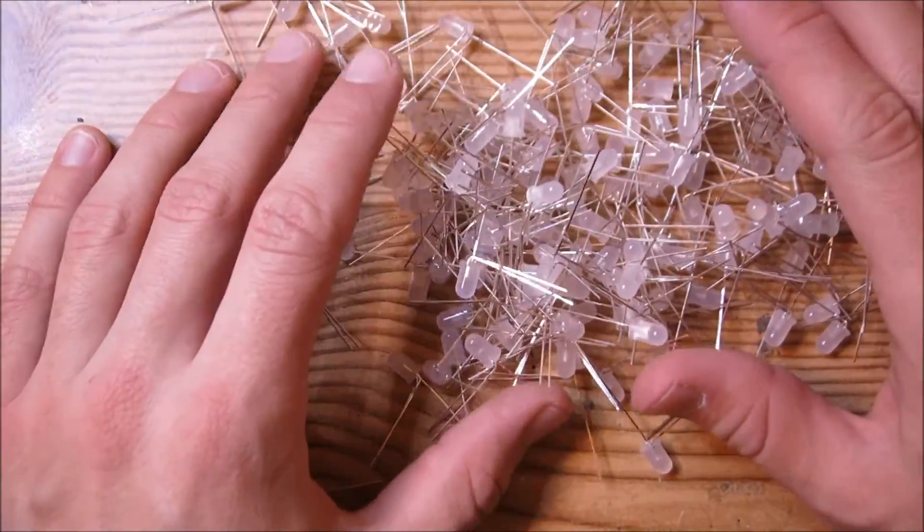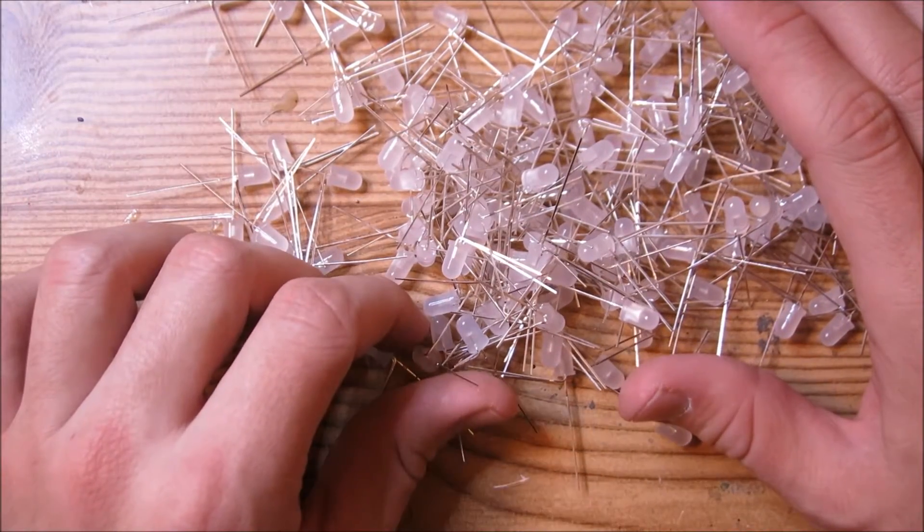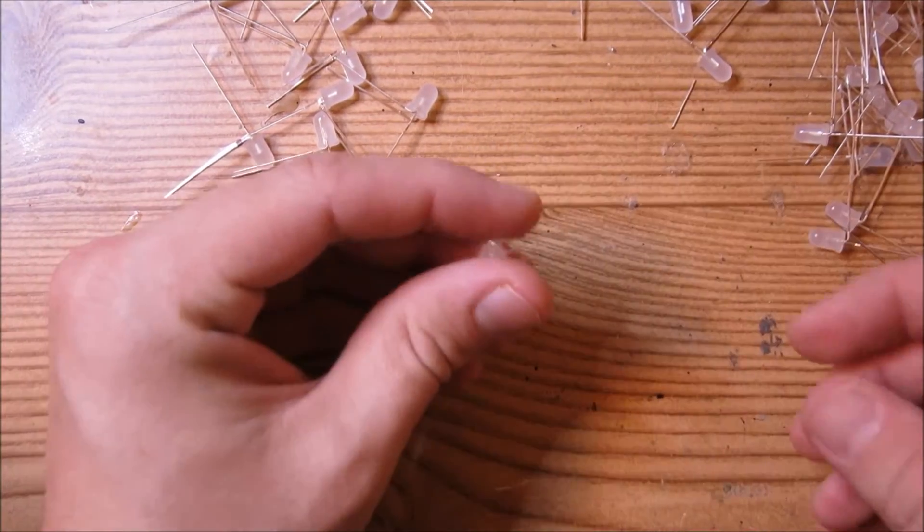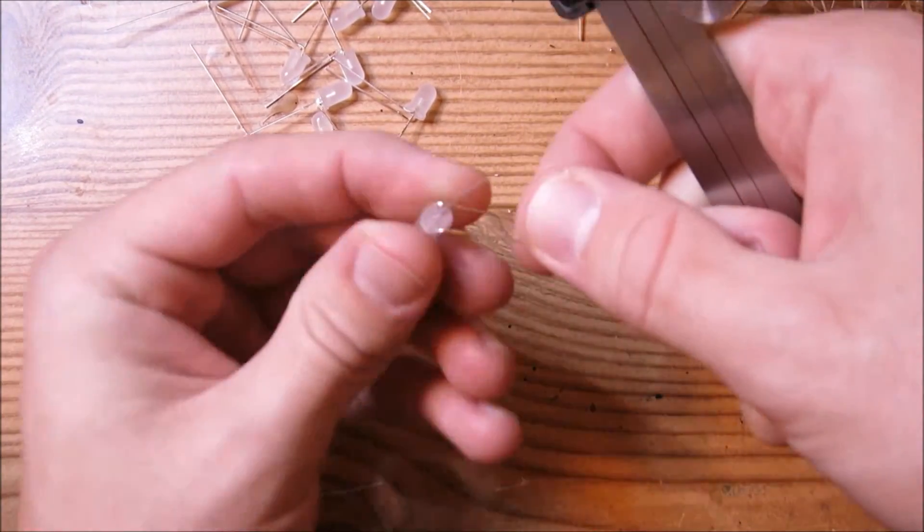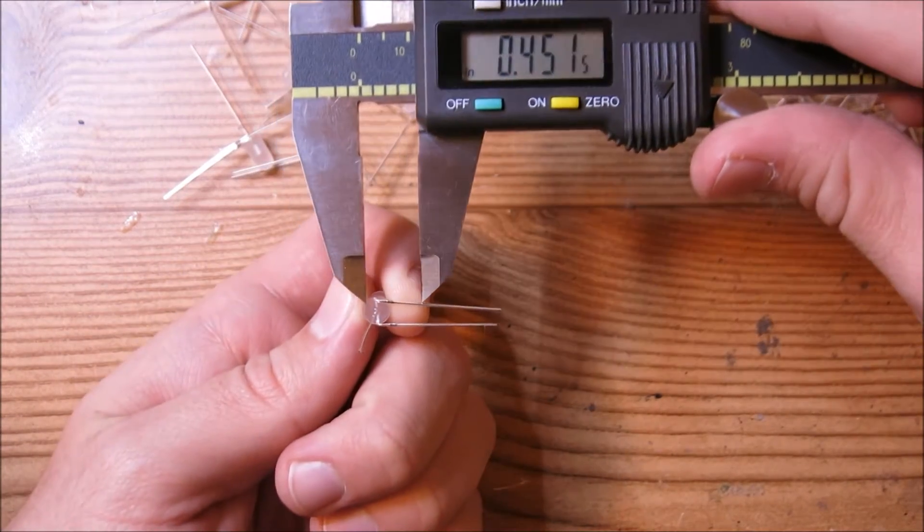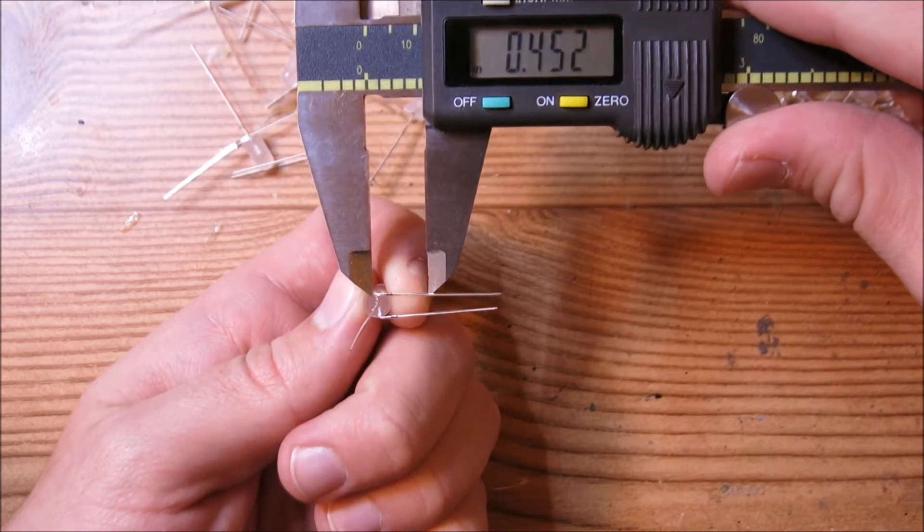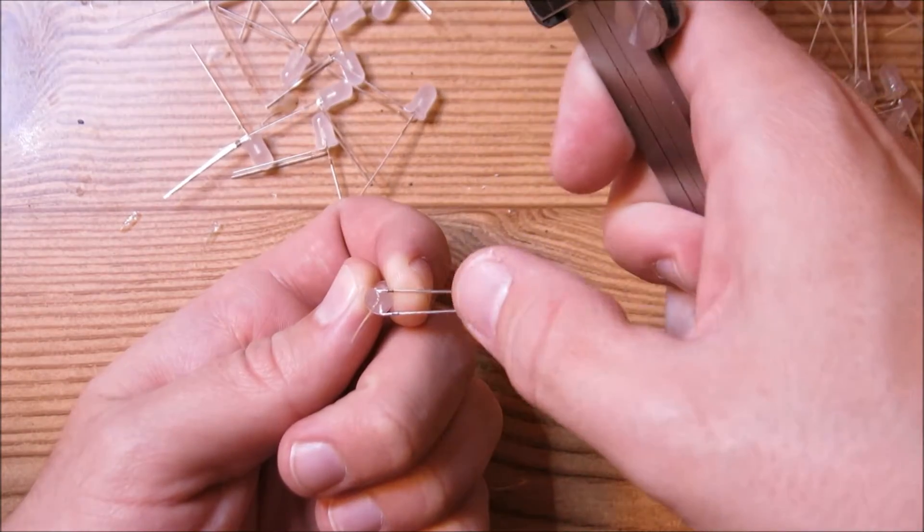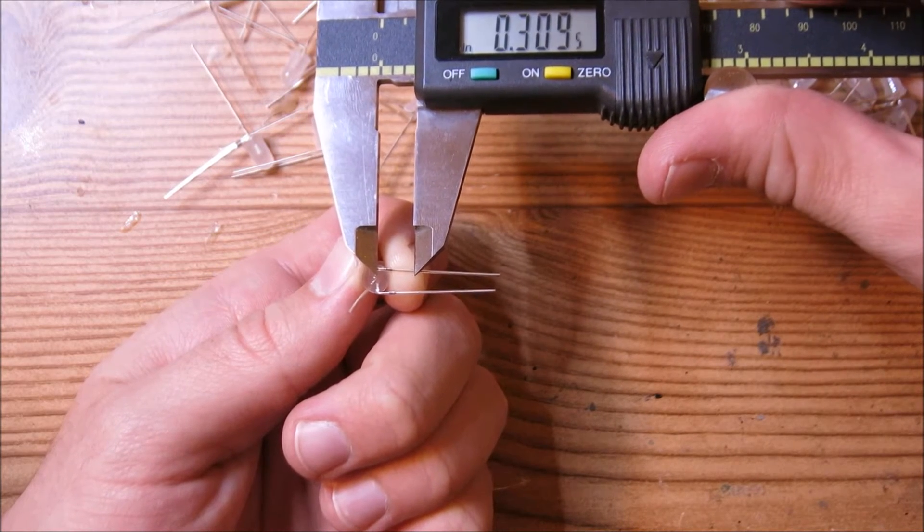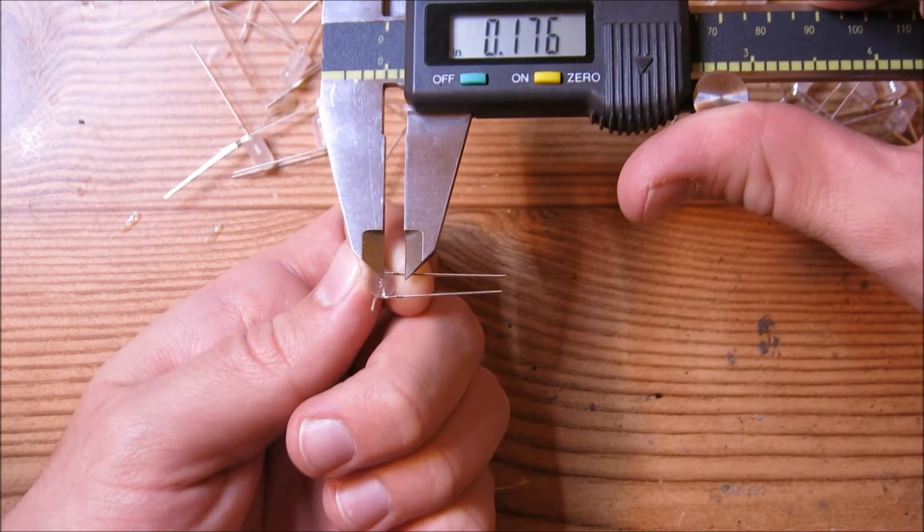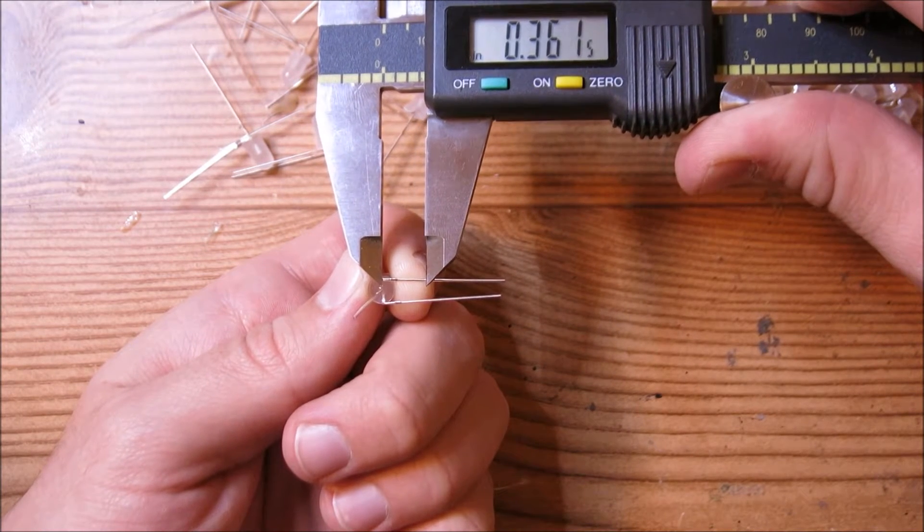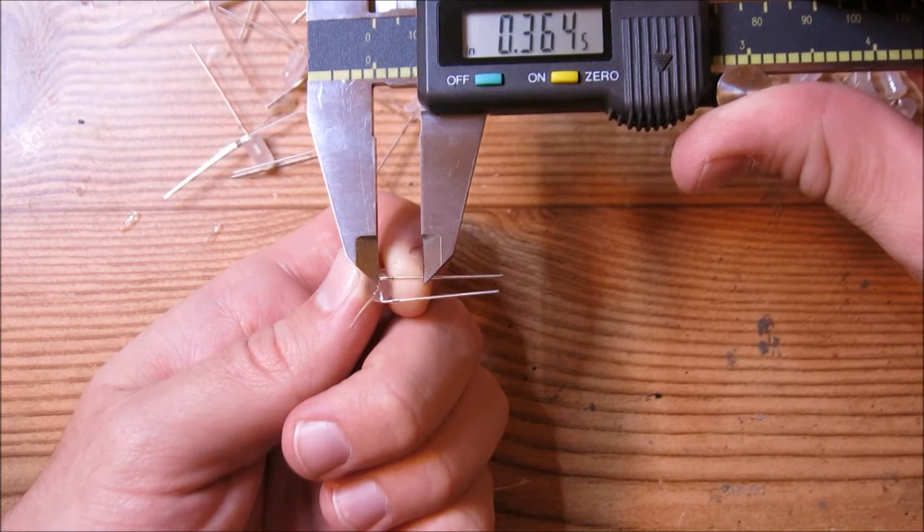Once you have all these LEDs bent, all 400 or so of them, we're going to move on to trimming off the leads. You want to trim off about half an inch starting from this side. Trim off about that much excess material off the end. Don't worry if you get a little shorter like that, that's fine too. If you get down to here, that's way too short. You want to keep between about a quarter inch and about half an inch.